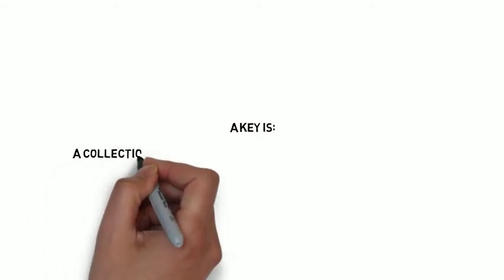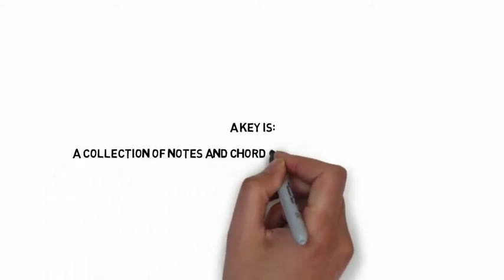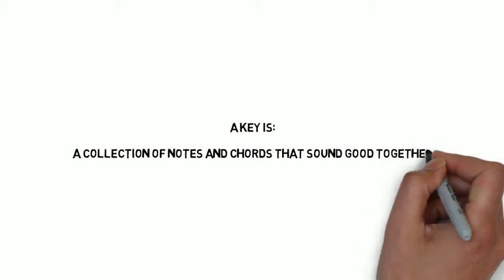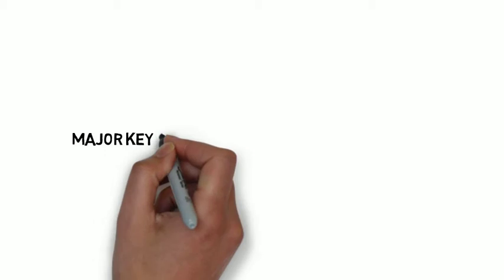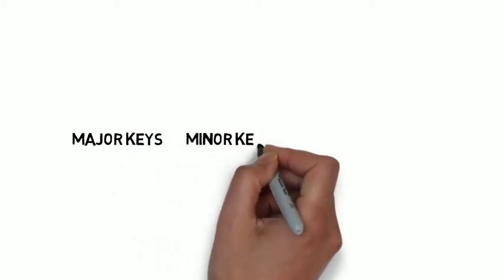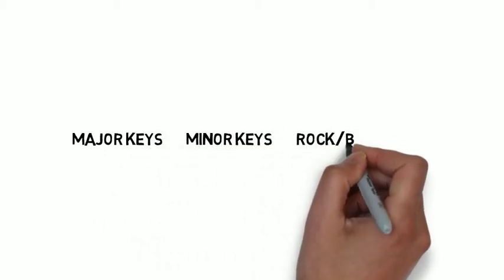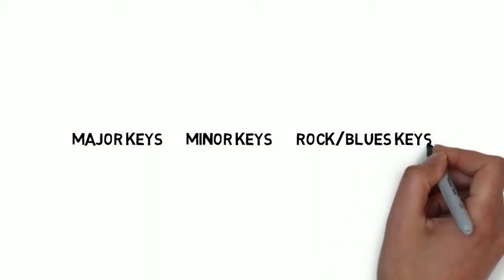A key is simply a collection of notes and chords that sound good together. There are three main types of keys that any song you hear will be created from. Each key type represents a different kind of feeling that the song will pass on.